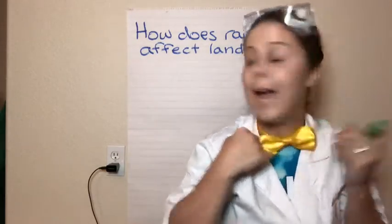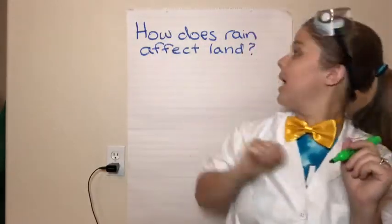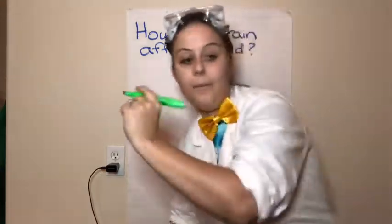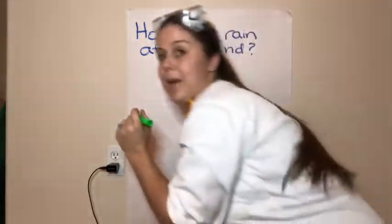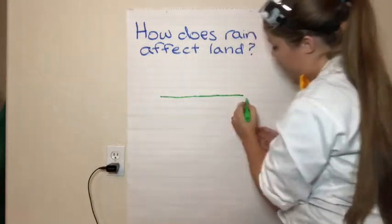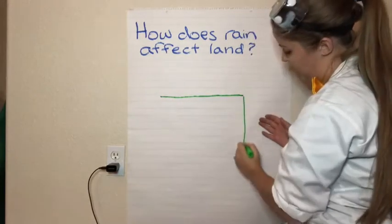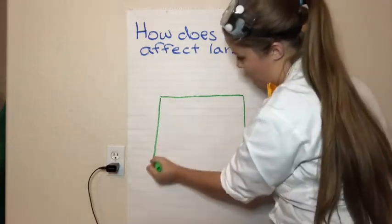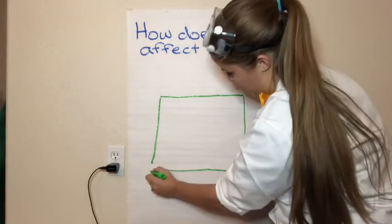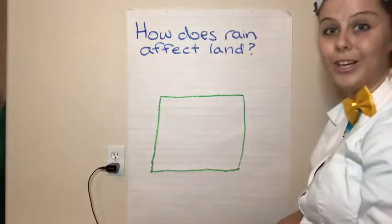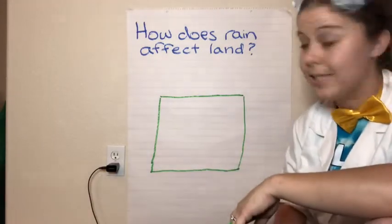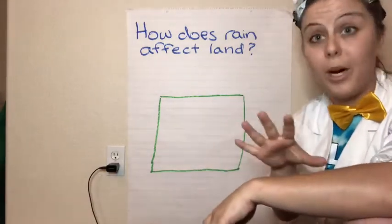Start at the top with: how does rain affect land? That is our scientific question of the day. Now you are going to make a box to record your observations — things we are going to see with our eyes, things we are going to observe when we do our experiment.